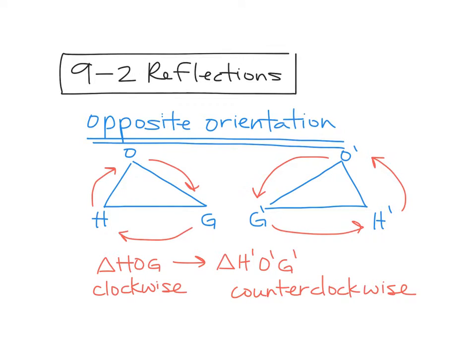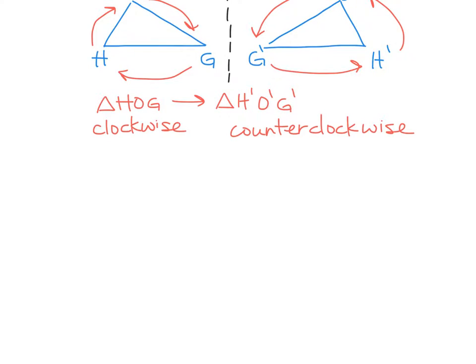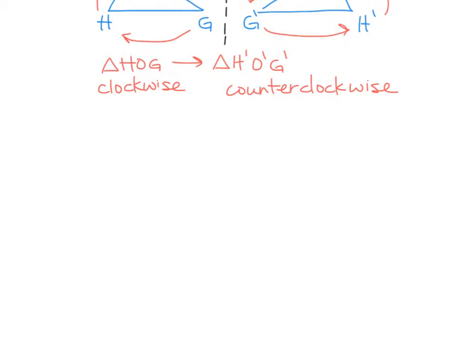Another thing to note about a reflection is there's always a line of reflection. There's always some line that you flipped your picture over. So like on this one that I just drew, my line of reflection would be somewhere right in the middle, where if I folded along that line, my two figures would land perfectly on top of each other. So let me give you another line of reflection set up here, just so you can see what I'm talking about a little better.